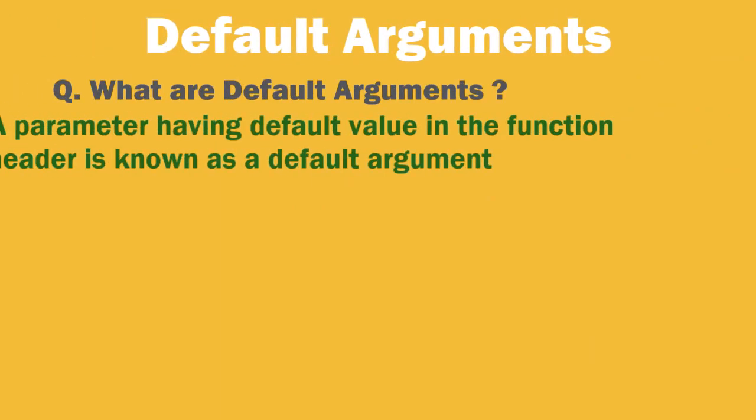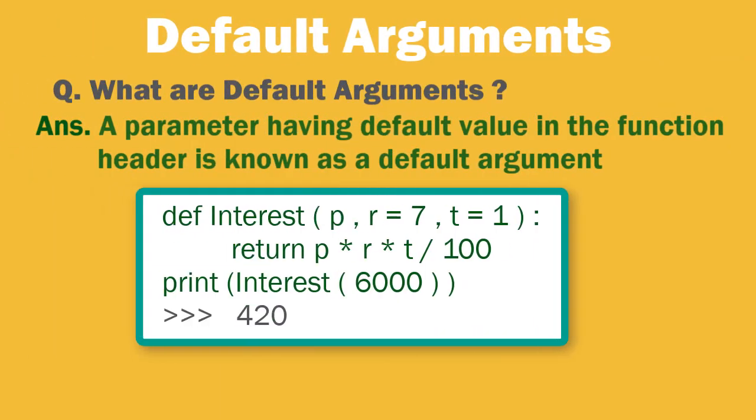What are default arguments? A parameter having default value in the function header is known as default argument. Like here, we have specified a default value for interest and time. So if user does not pass this parameter, then by default the program takes seven and one respectively. Do note however, all parameters appearing on right can have default values. Non-default arguments cannot follow default arguments.